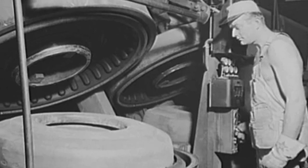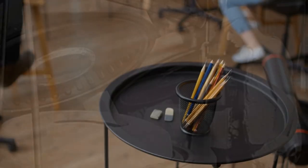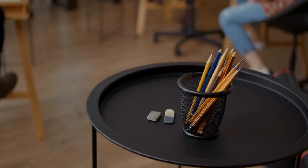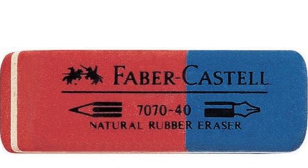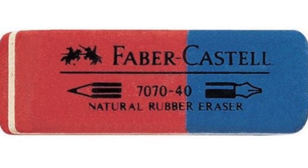With the advent of vulcanized rubber, the modern eraser as we know it began to take shape. Companies like Faber-Castell and Stadler revolutionized eraser production, mass-producing high-quality erasers for widespread use.